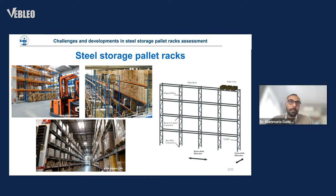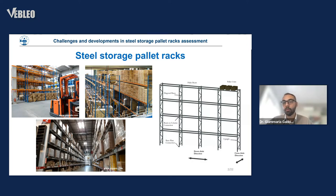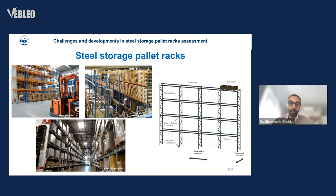We can find two different typologies of frame if we consider the down-aisle or longitudinal direction, and the cross-aisle or transversal direction. In the transversal direction, we have a bracing system which provides the lateral stiffness and resistance for horizontal forces. The bracing system is adopted with diagonal bracing elements, while in the longitudinal direction we have a moment-resistant frame. In this case, the stability is provided mainly by the base plate connections and the beam-to-column connections — all the stiffness, resistance, and plasticity is concentrated in these two particular connections.